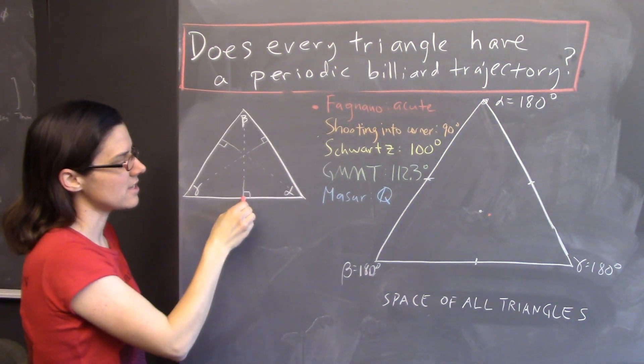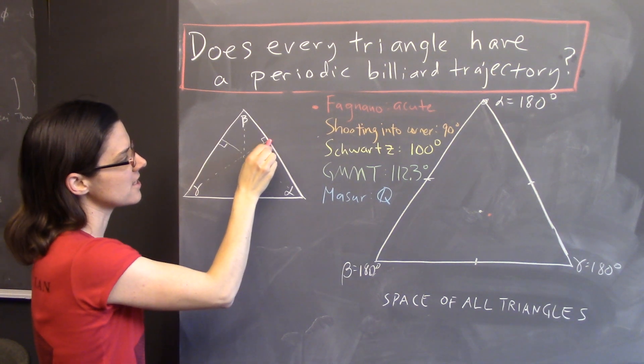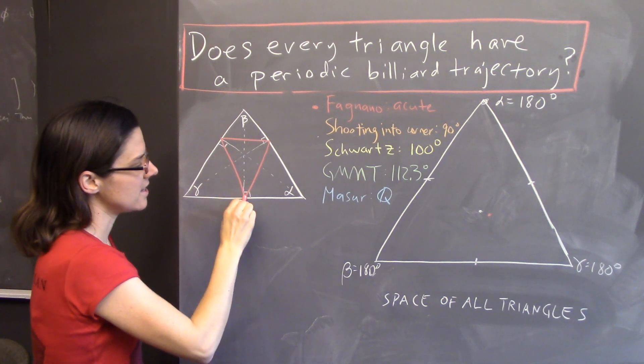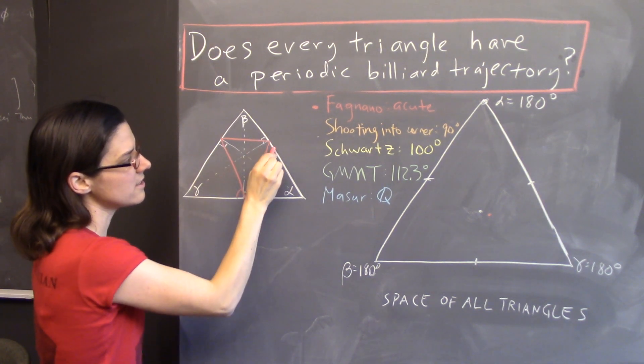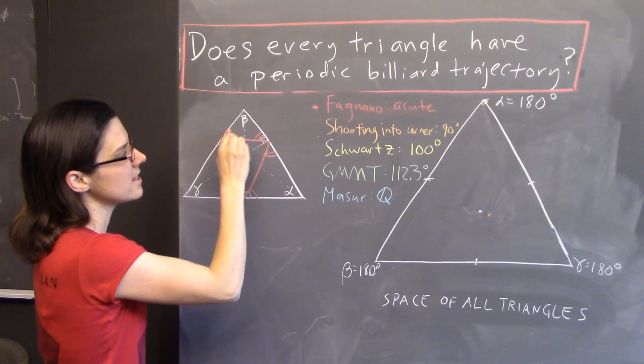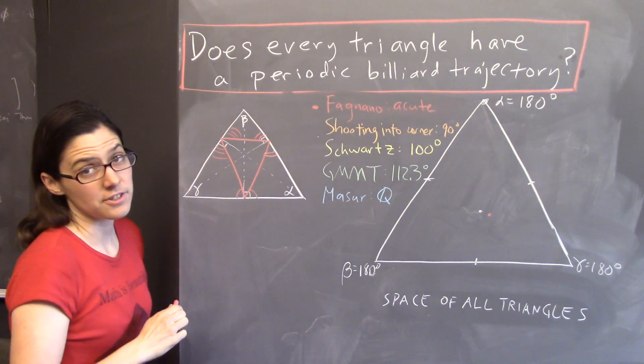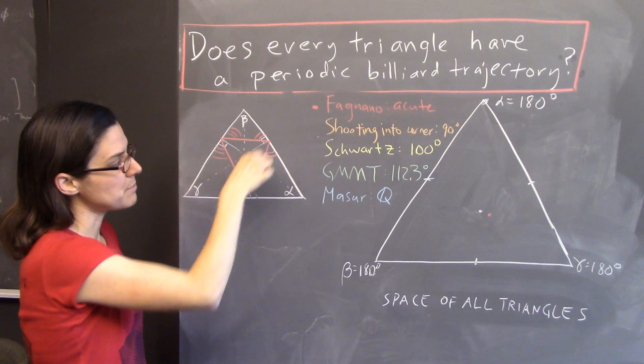You drop the altitudes and you connect the feet of the altitudes, and then it turns out that these angles are equal, these angles are equal, and these angles are equal to each other, so this is a periodic billiard trajectory.